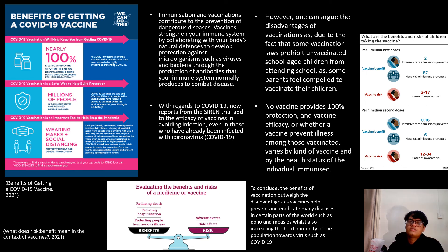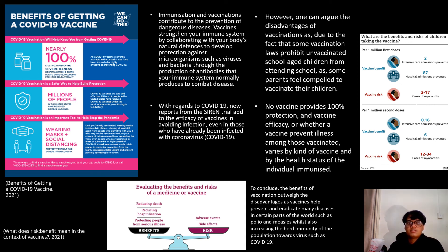Immunization programs have aided in the eradication of some diseases. The World Health Organization declared smallpox eradicated in 1979, and Europe has been polio-free since 2002, owing to widespread vaccination programs. Furthermore, prior to the advent of vaccines, child fatalities from diseases such as measles, polio, and whooping cough were more prevalent. While these diseases continue to exist, vaccines offer a greater level of protection against catastrophic consequences associated with them.